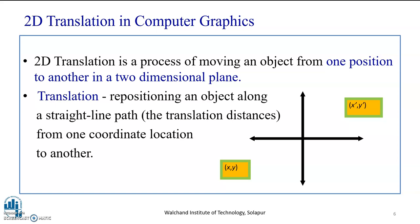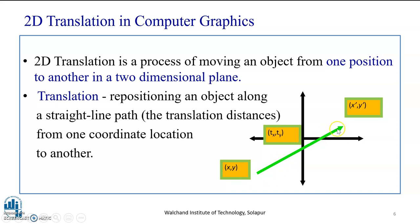As you can see in the diagram given here, x, y is a point, whereas this point is translated to x-dash y-dash, where the repositioning of the object, that is the point, happens along a straight line path. So, this is called as the translation distance, which is denoted by tx and ty.